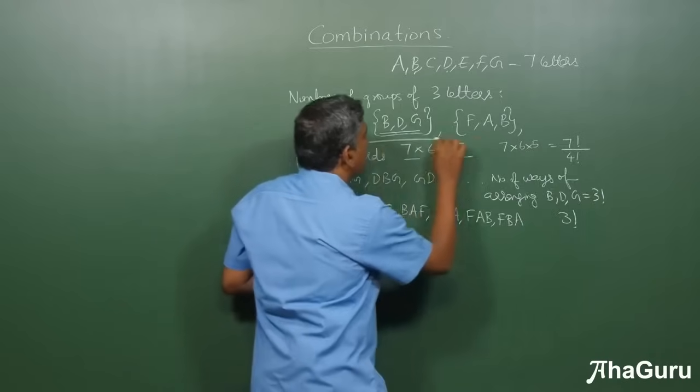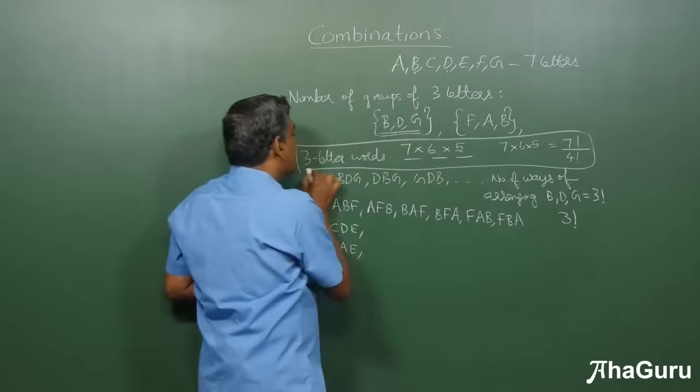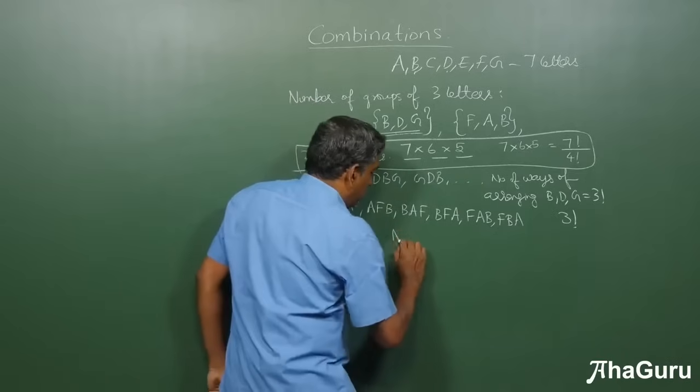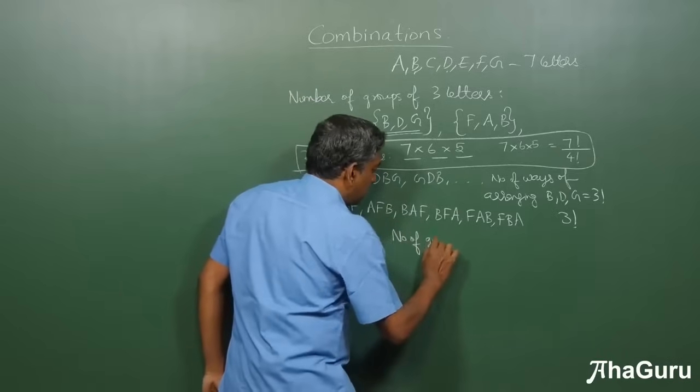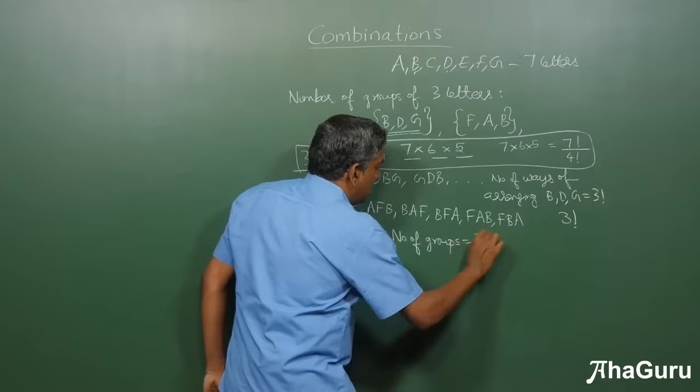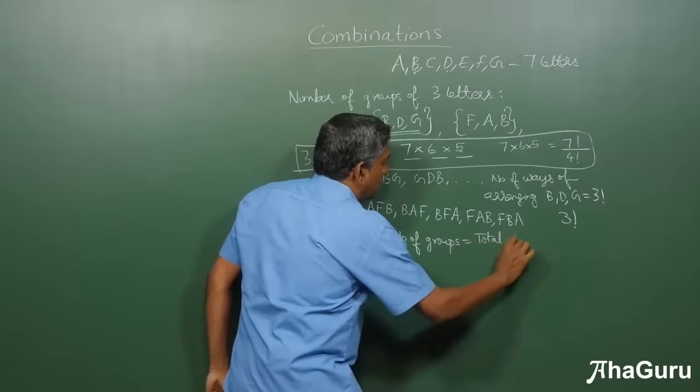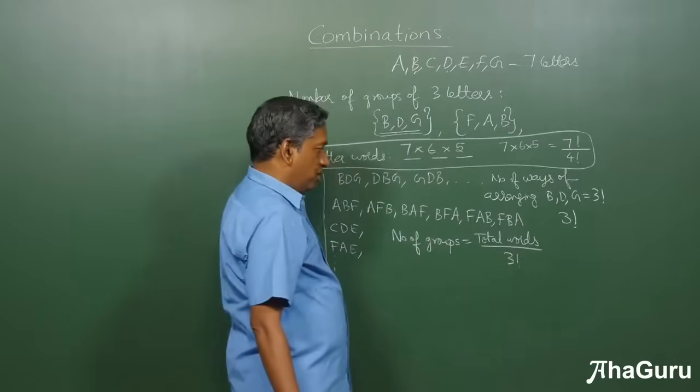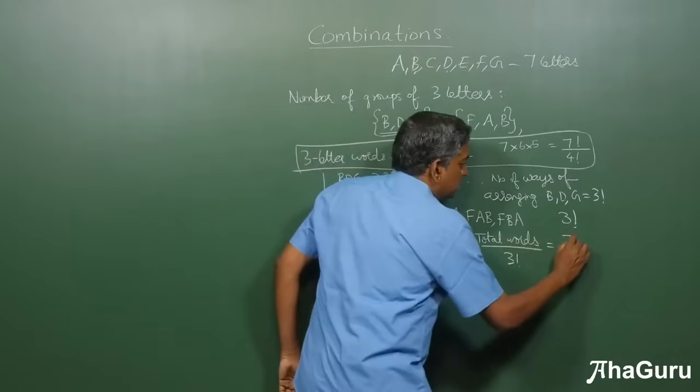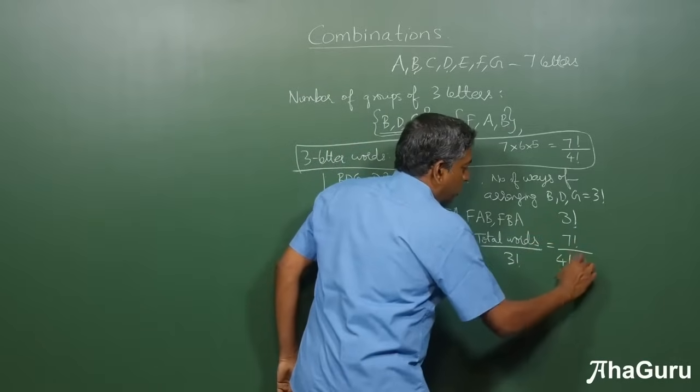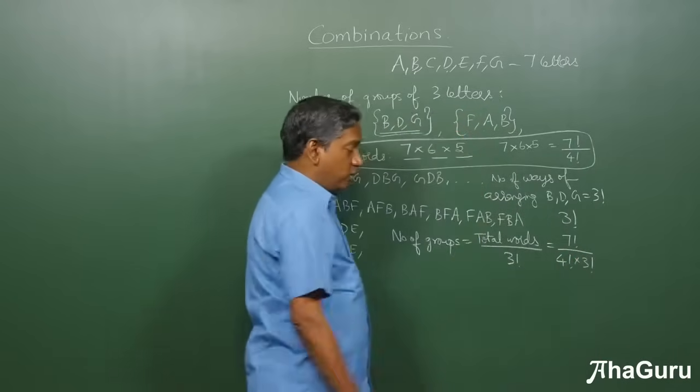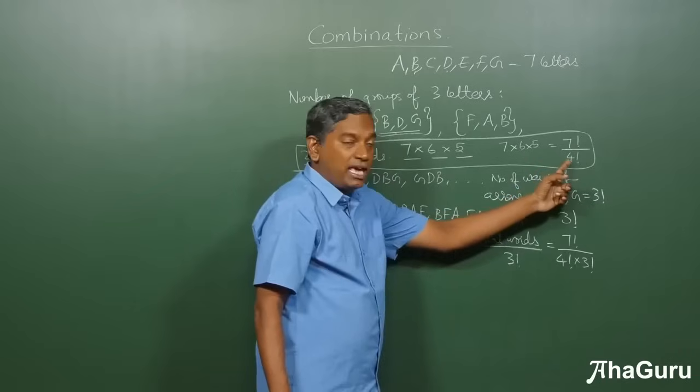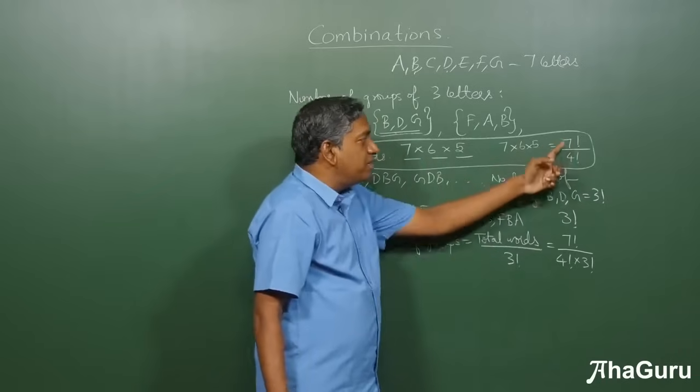We can say this is the total divided by 6, because each group is repeated 6 times. But the total we already found, the number of 3 letter words is 7 factorial by 4 factorial. So, number of groups is total words divided by 3 factorial. Okay? So, this is 7 factorial by 4 factorial times 3 factorial. And what you will find is that that 4 came actually as 7 minus 3.